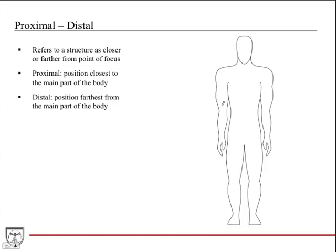Proximal and distal are well described on the extremity. Proximal means closer to the point of focus — so the proximal arm is proximal to our point of focus — while the hand is distal, being the farthest point from the point of focus.